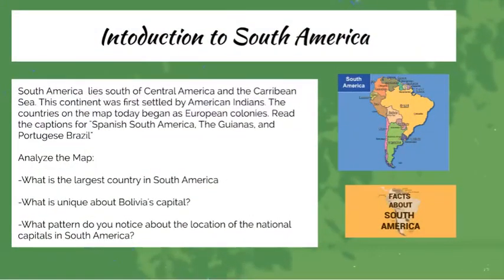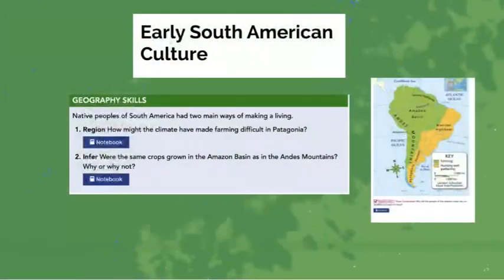We'll also be starting off by looking at the regional and physical maps of South America. South America lies south of Central America that we've covered, and the Caribbean Sea. This continent was first settled by American Indians. The countries on the map today began as European colonies. We're going to be reading the captions for Spanish South America, the Guianas, and Portuguese Brazil. We'll also be analyzing the map and looking at questions like what the largest country is, what is unique about Bolivia's capital, and what pattern we notice about the location of national capitals in South America. We'll be having an interesting facts activity about South America, and then start exploring its culture, making inferences to characterize lifestyle and workplace.